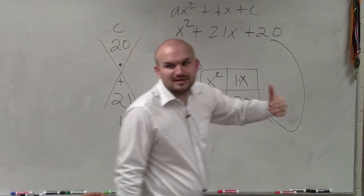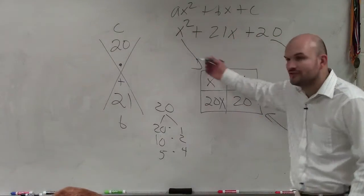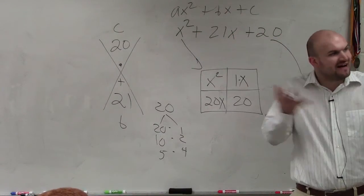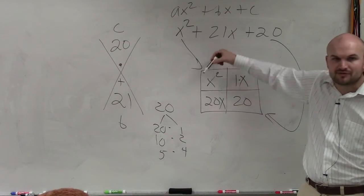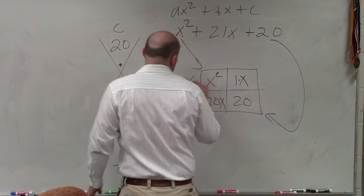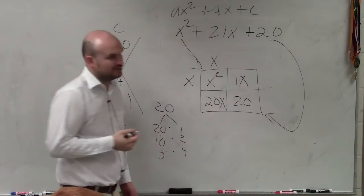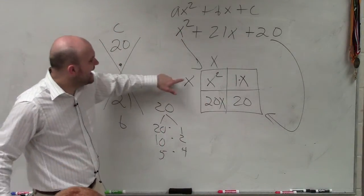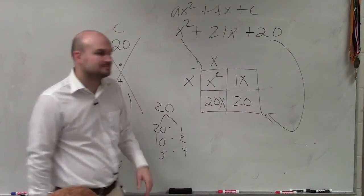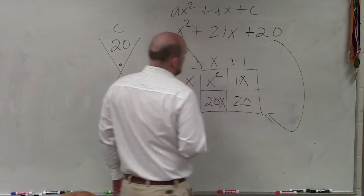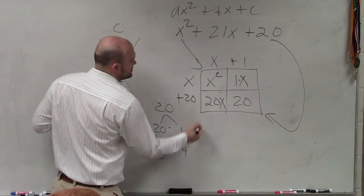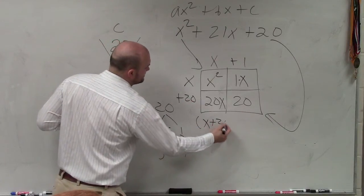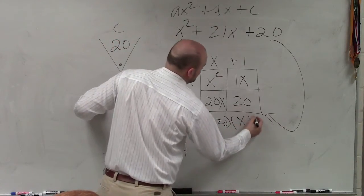Now let's look at what are all the side lengths. Remember factoring is finding the side lengths. So let's look at the upper left-hand corner. What are the side lengths for x squared? x and x. Would everybody agree with me? x times what gives you 1x? x times what gives you 20x? So therefore, you guys can see this is x plus 20 times x plus 1.